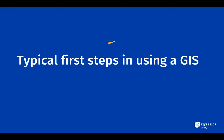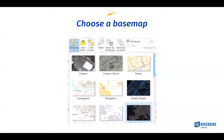For typical first steps in a GIS, one of the first things is to choose a base map — what you see before adding any data. You have many choices: satellite imagery, maps emphasizing streets for urban work, or maps emphasizing landscape relief and topography. You can start with the default and switch later. Just be aware that you have lots of choices for what's in the background behind your data.